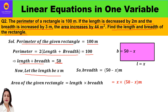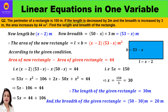Let the length be x meters, so breadth will be (50 − x) meters. Area of the given rectangle is length × breadth = x(50 − x). Further, if the length is decreased by 2 meters and the breadth is increased by 3 meters, the new length is (x − 2) meters and the new breadth is (50 − x + 3) = (53 − x) meters. Area of the new rectangle is (x − 2)(53 − x).